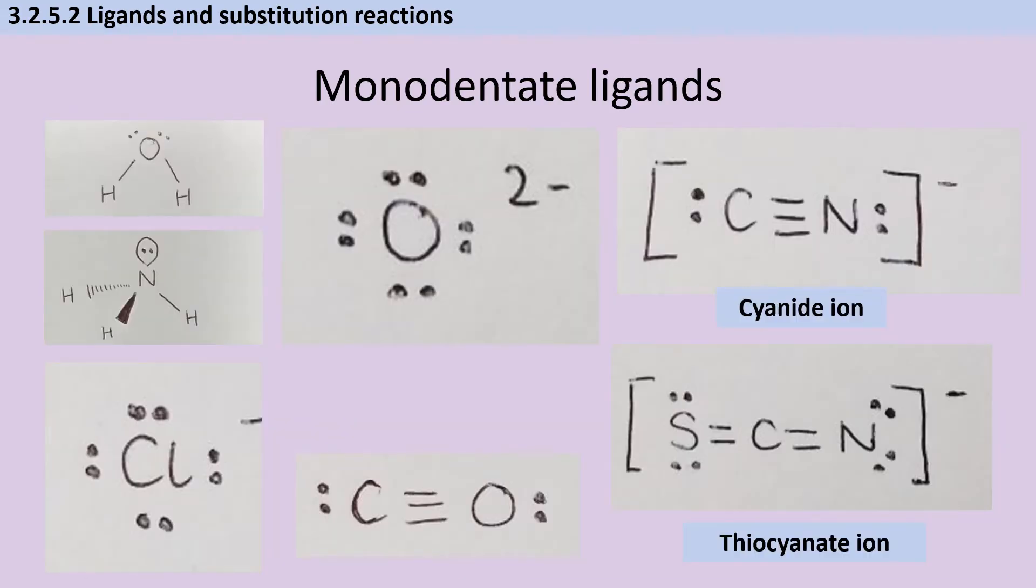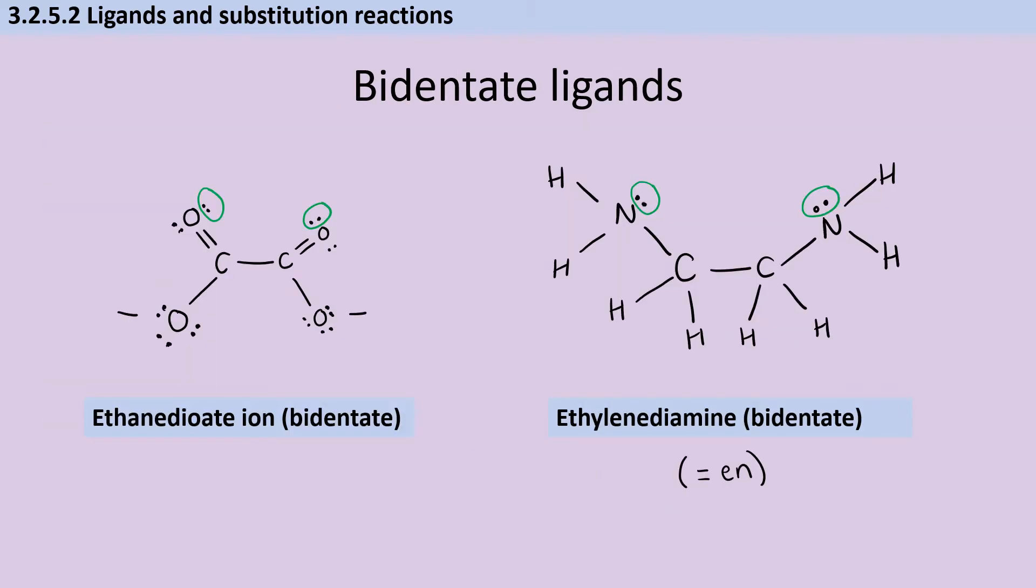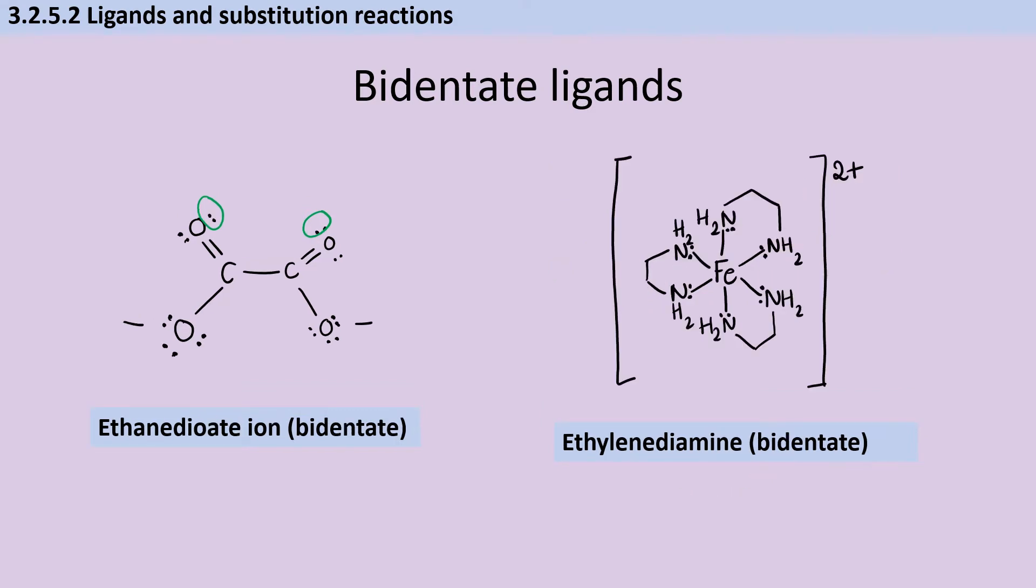Cyanide and thiocyanate ions are not named examples in the specification but appear frequently, so it's worth being aware they're monodentate. The two bidentate ligands you should recognize and draw are the ethane dioate ion, also known as oxalate, and the ethylenediamine molecule, abbreviated as EN in sketch diagrams. For each, you should recognize and draw the ligand and identify the lone pairs that allow it to bond.